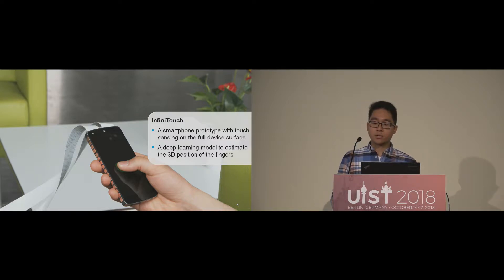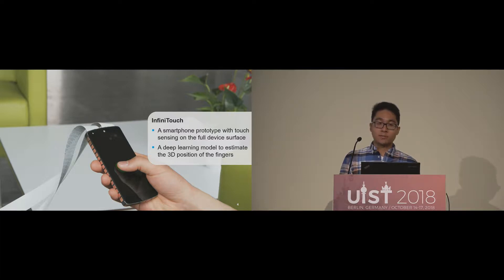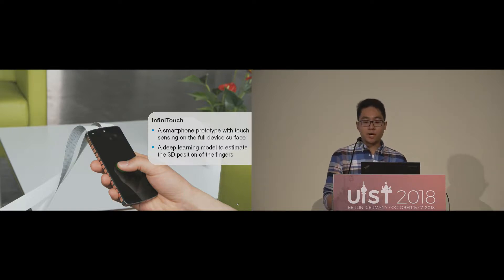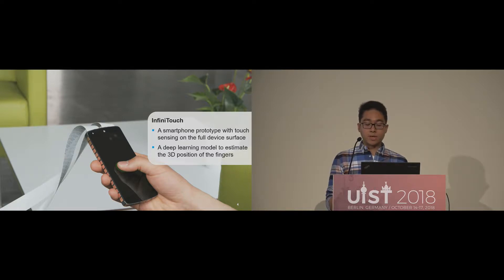We address this challenge and present InfiniTouch, a smartphone prototype which enables touch input on the whole device surface. In addition, our prototype uses deep learning to estimate the 3D position of the fingertips based on raw capacitive measurements. With this, each finger can now be responsible for a different function, while inputs of all other fingers and other parts of the hand are automatically ignored. This opens a wide range of new use cases, which I will show in the following.